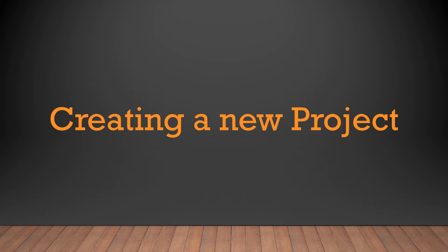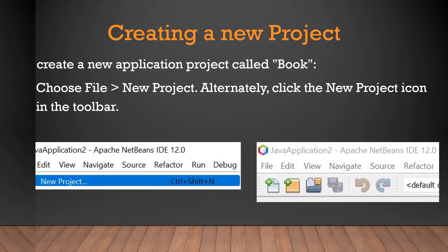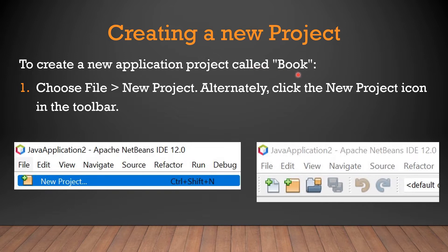Let us start with our first topic: creating a new project. To create a new application project called 'book', first go to the menu bar, click on File, and then click on New Project. Alternatively, you can click on the New Project icon in the toolbar to create a new project.